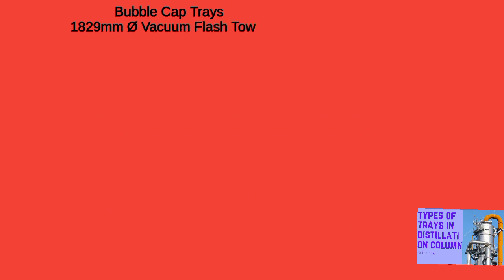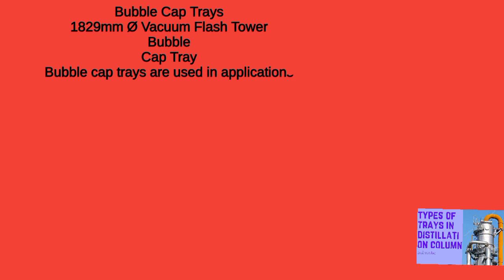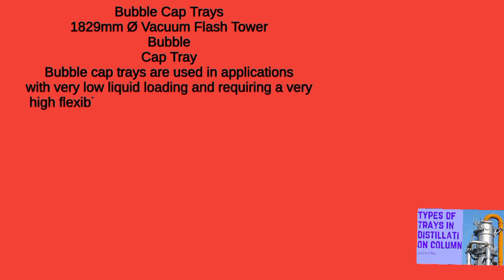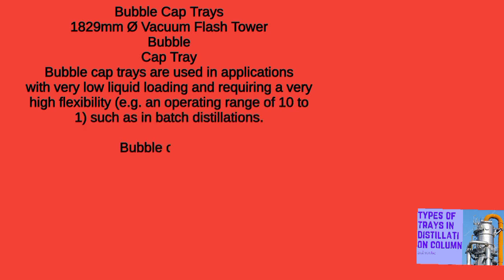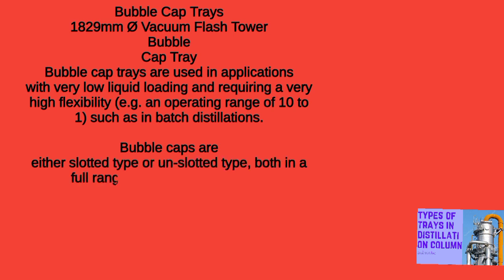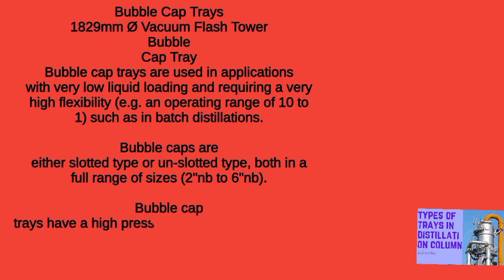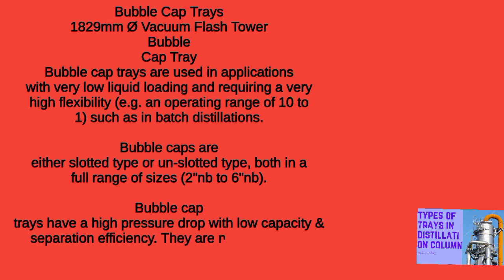Bubble Cap Trays are used in applications with very low liquid loading and requiring very high flexibility, e.g. an operating range of 10 to 1, such as in batch distillations. Bubble caps are either slotted type or unslotted type, both in a full range of sizes 2 NB to 6 NB. Bubble Cap Trays have a high pressure drop with low capacity and separation efficiency. They are not suitable for fouling services.